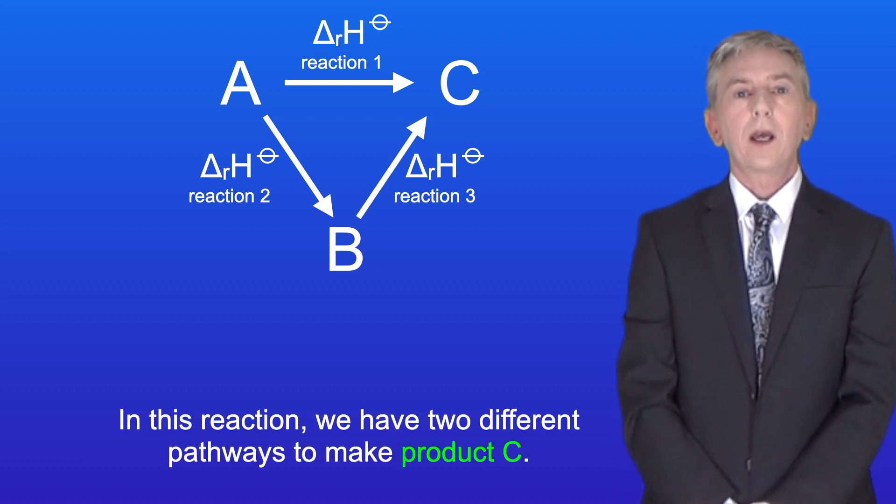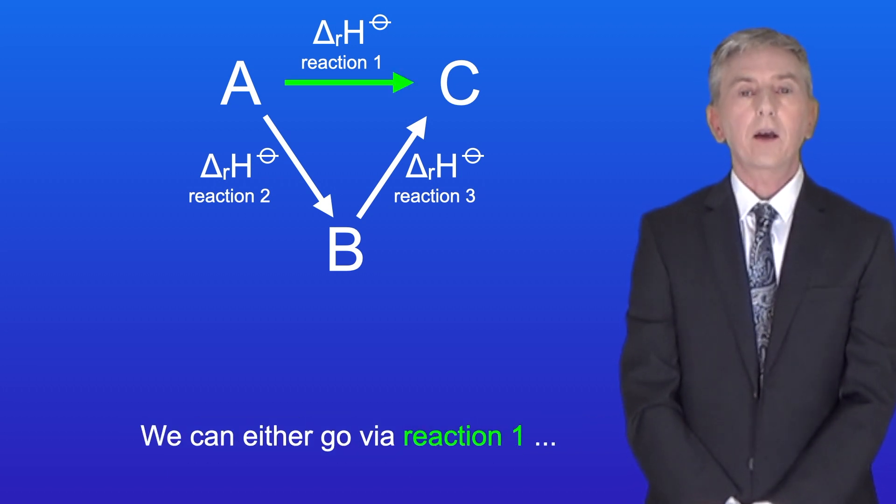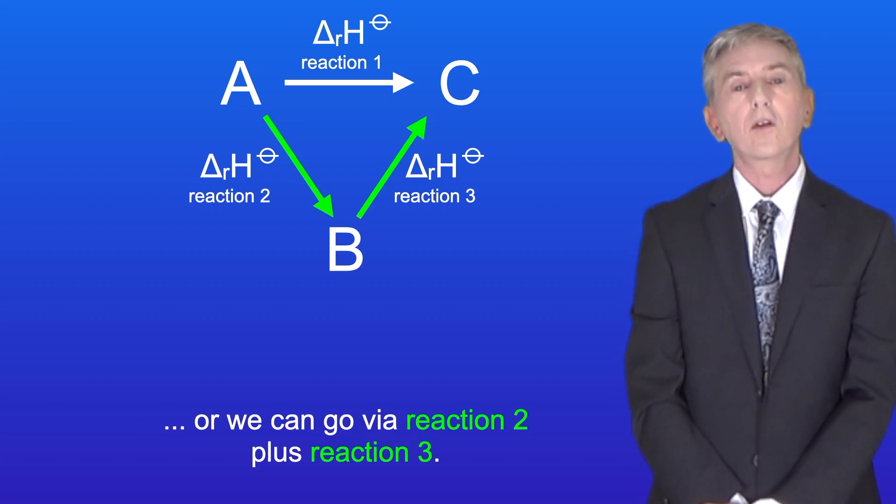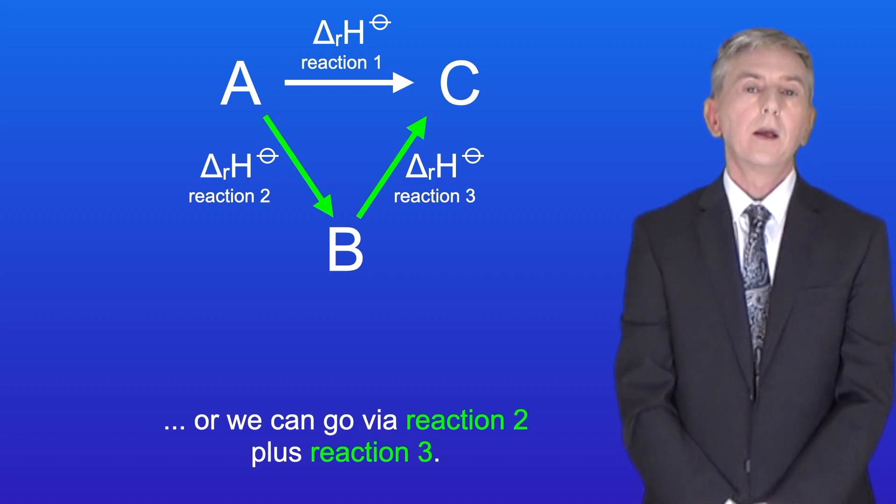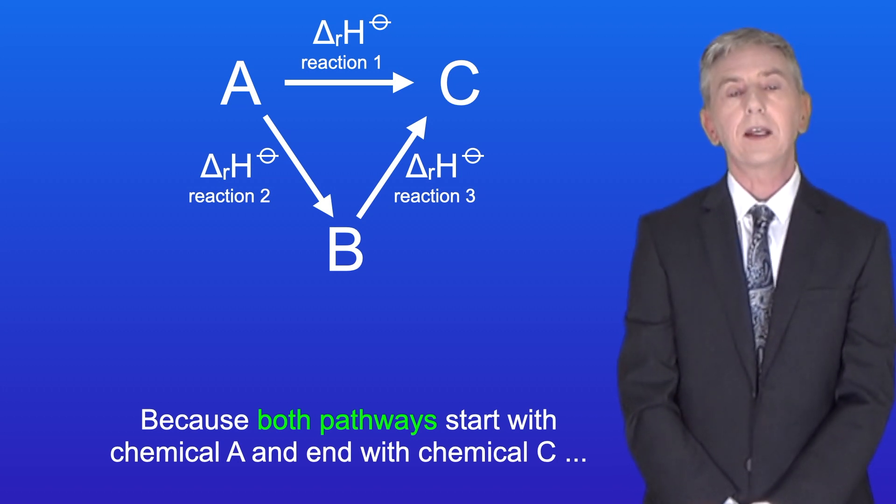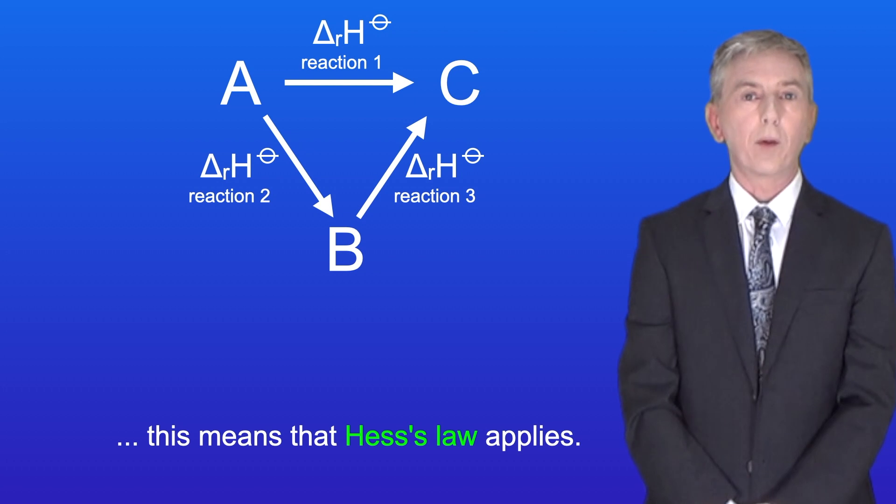So in this reaction we have two different pathways to make product C. We can either go via reaction 1 or we can go via reaction 2 plus reaction 3. Now because both pathways start with chemical A and end with chemical C, this means that Hess's law applies.